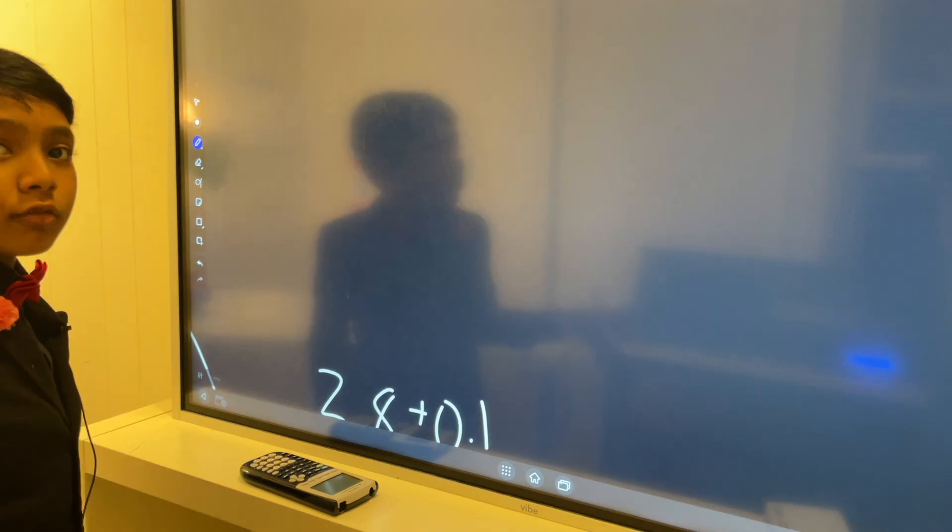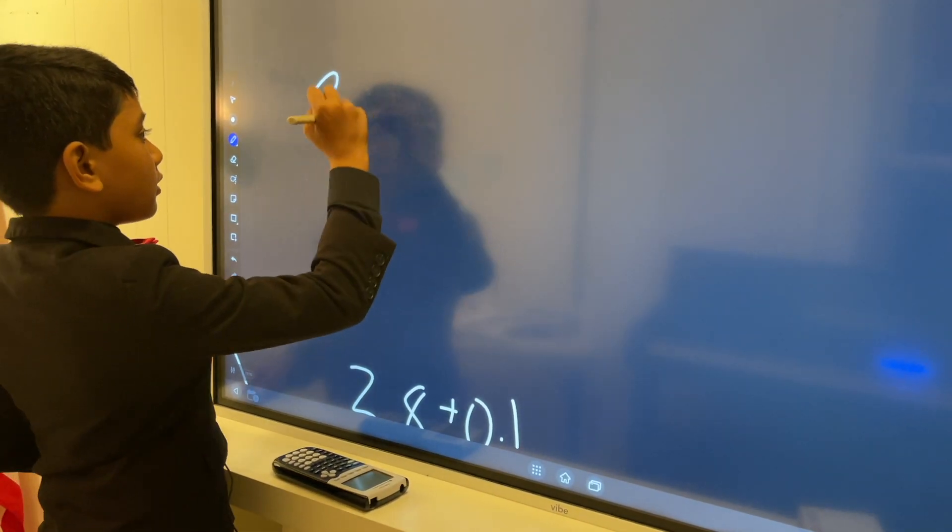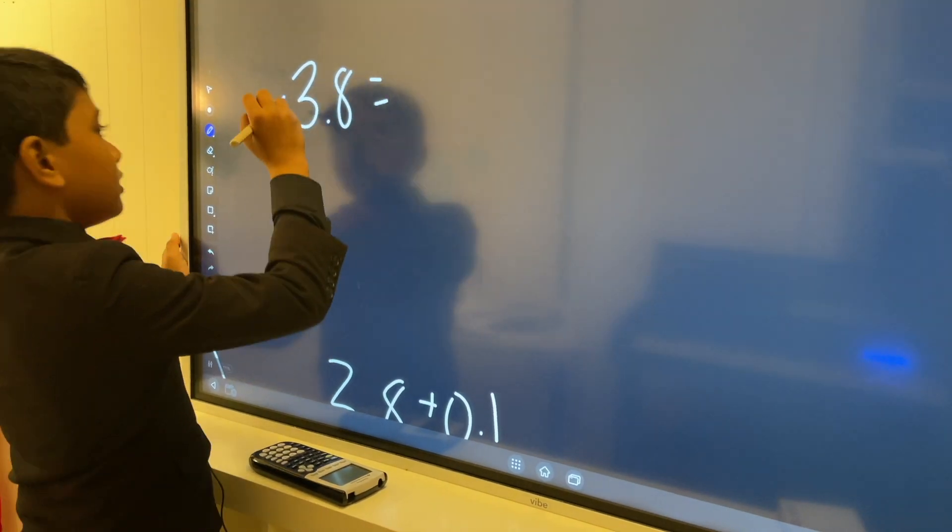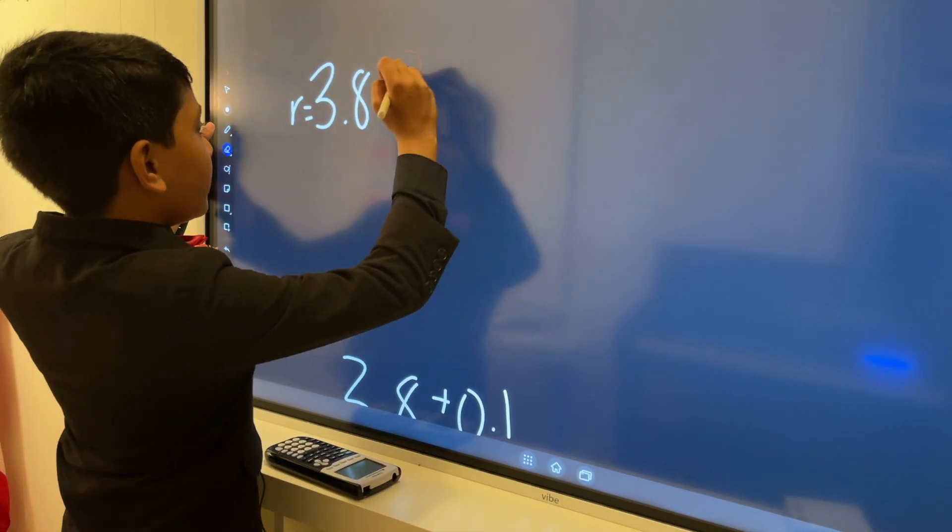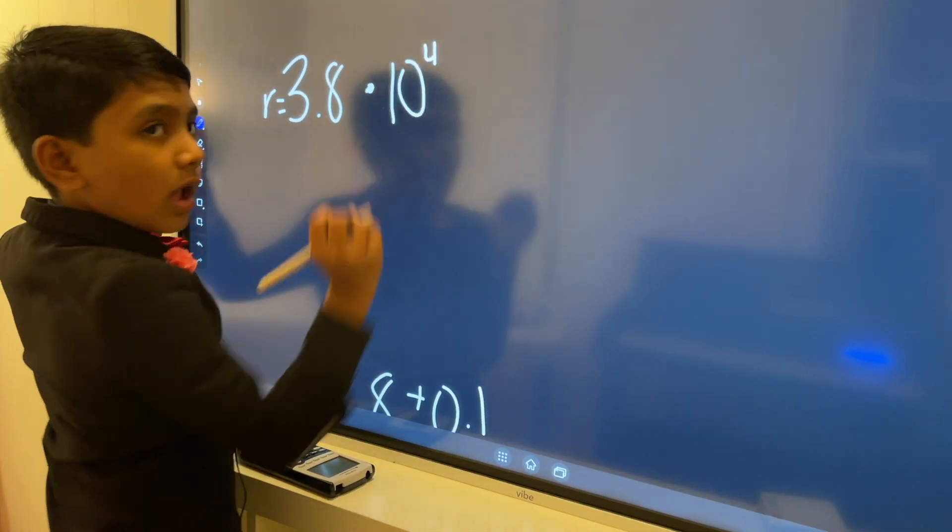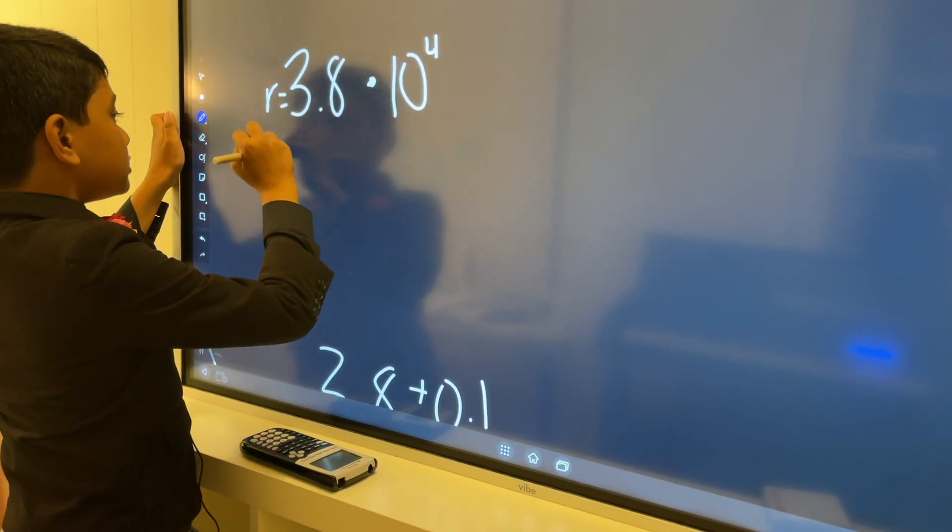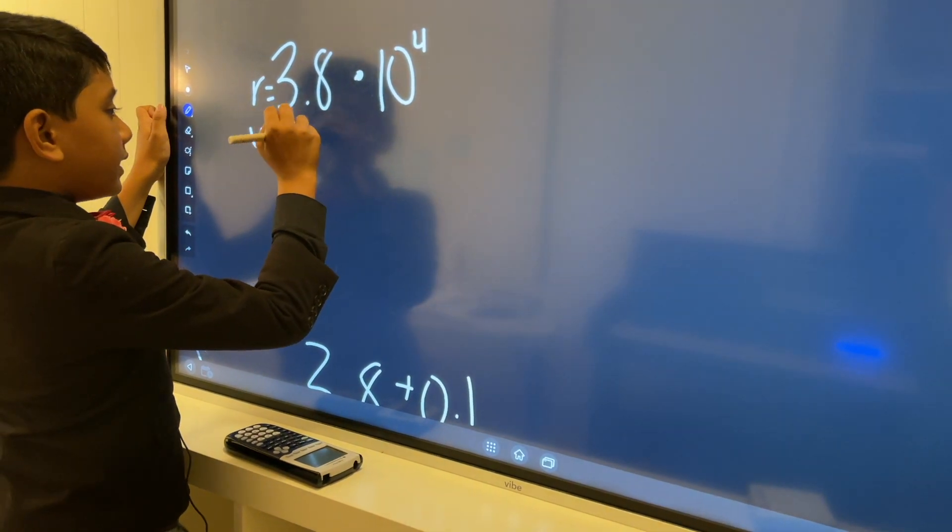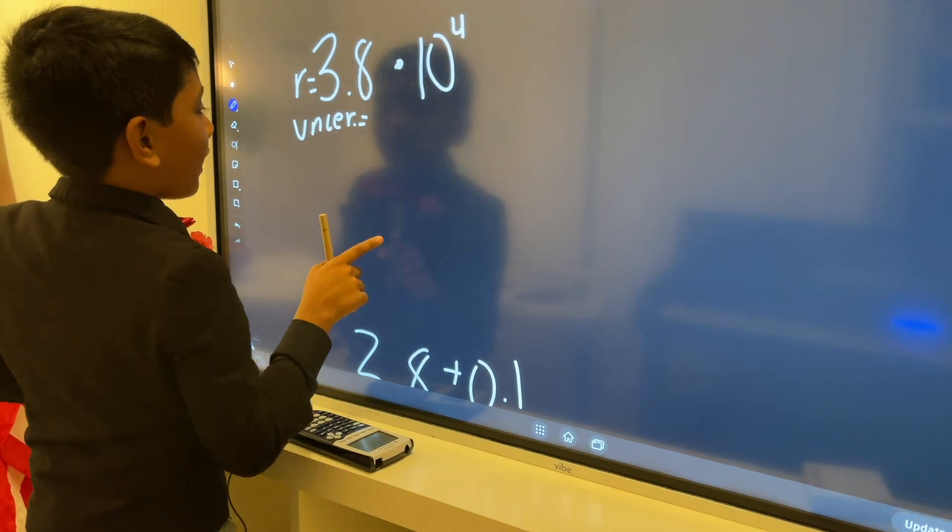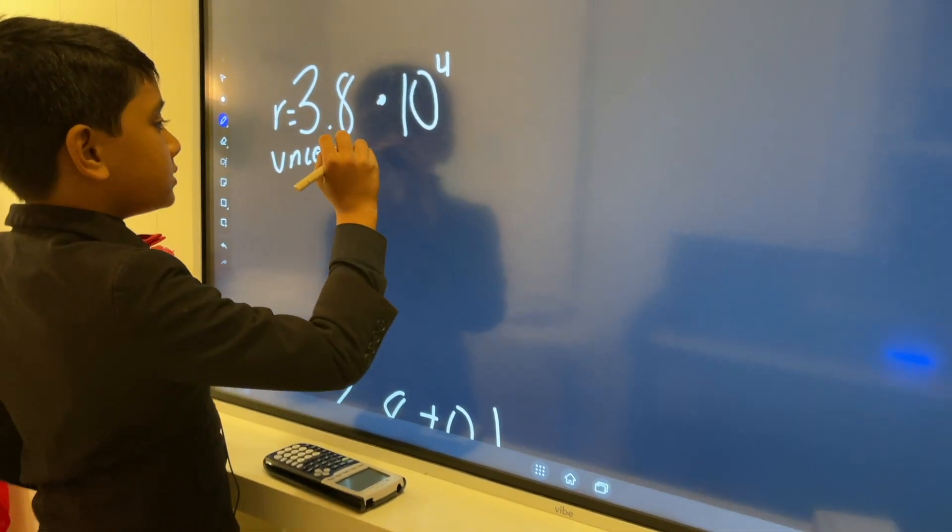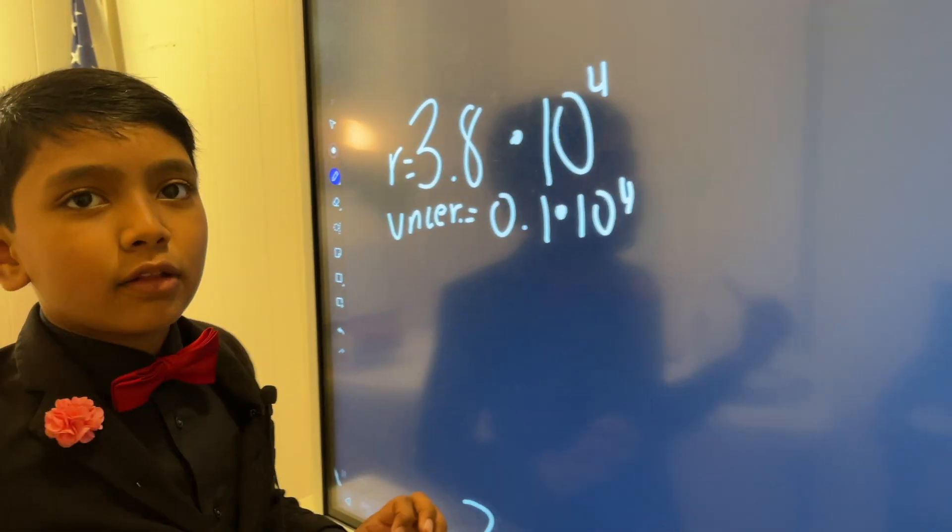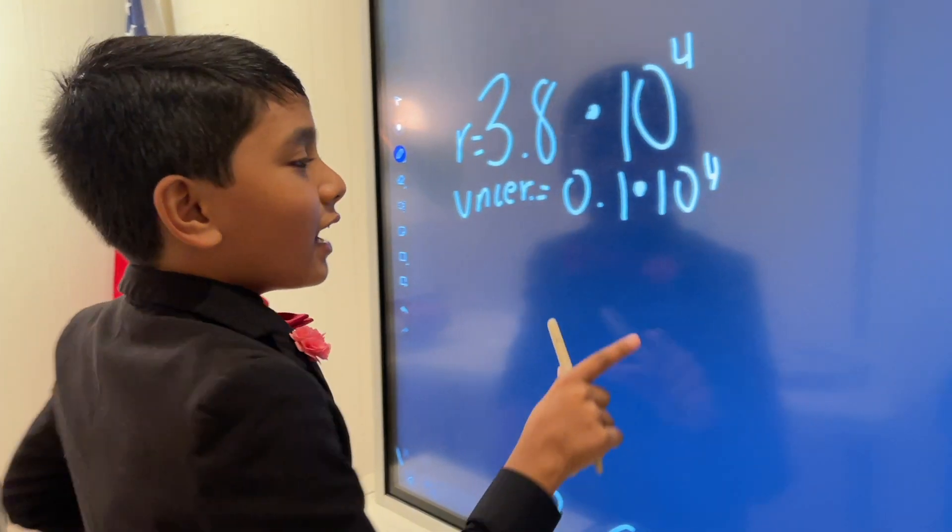So, these are our given. The radius is 3.8 times 10 to the 4th power. And our uncertainty in the radius is 0.1 times 10 to the 4th. Or 1 times 10 to the 3 if you're a fancy guy. Anyway,